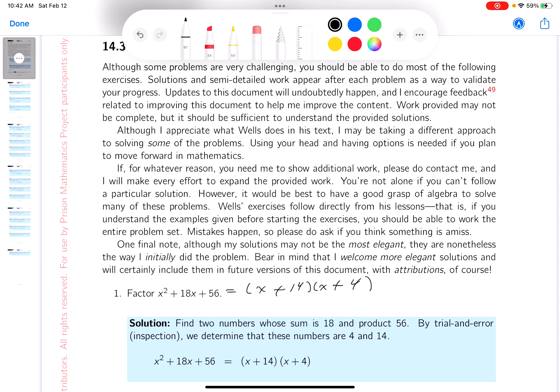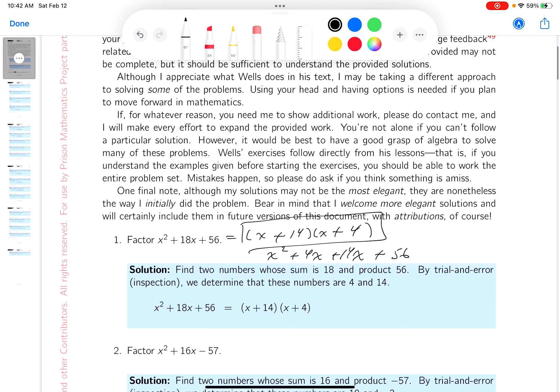And what would I do now? I check it. How do you check it? You get x squared plus 4x plus 14x, and 4 times 14 is 56. Does it work? Of course it does.